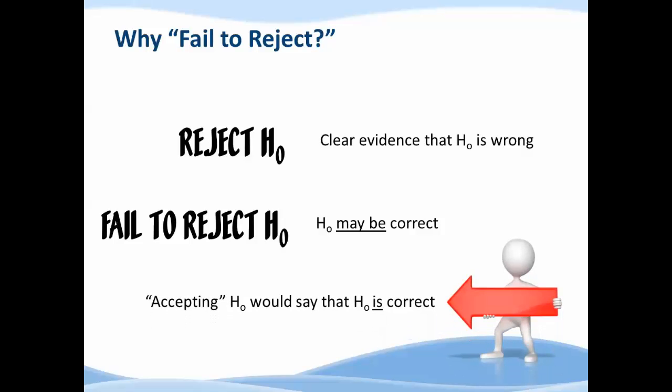That's code words meaning that the null may be correct. If you were to use something like accept the null - because quite honestly accept is the opposite of reject - why don't we just say accept the null? Well that would be saying that the null is correct. There is a difference between saying something is correct and saying something may be correct. So the proper way to state this is if the null is wrong we reject the null. If we can't reject the null, we begrudgingly fail to reject the null. So let's look at a fun example to try to illustrate this.